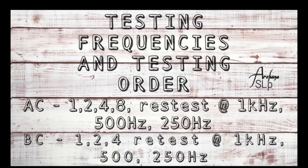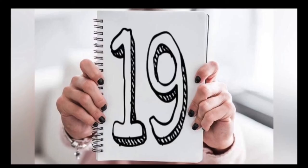Tip number 18: testing frequencies and testing order. Pure tone thresholds should be obtained in a specific order for each ear. The 1 kHz retest is done as a reliability check and is expected to be within plus or minus 5 dB.